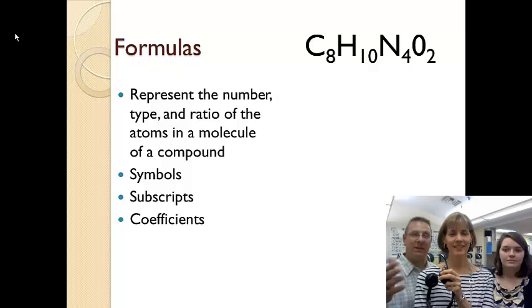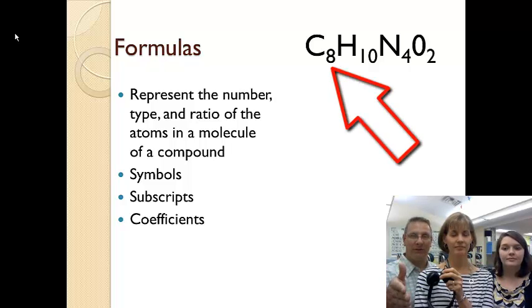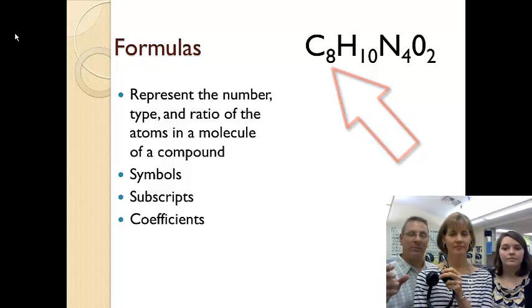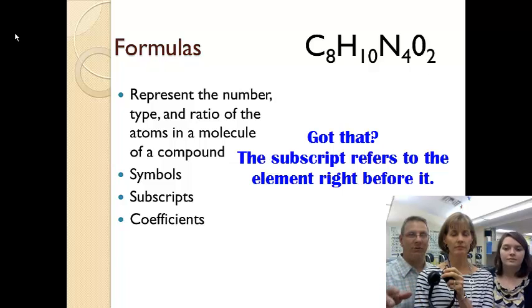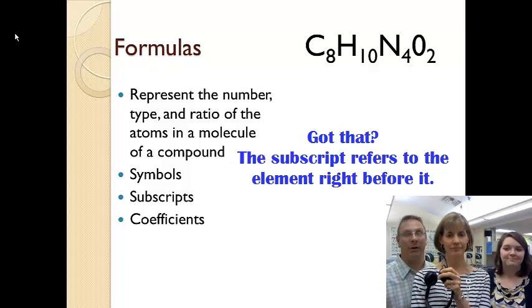So in this example, there are 8 carbons and 10 hydrogens. The subscript refers to the element right before it, the symbol right before it. Some people think that would be 1 carbon and 8 hydrogens, but that's totally wrong.